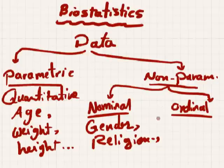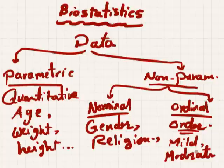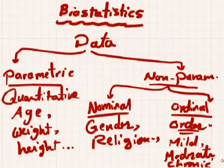Ordinal data is defined by order or ranking. For example, when I say this patient has mild asthma, moderate asthma, or chronic asthma — or when I say this is acute or chronic, this is severe — you are ordering them. This is the most important concept to understand well, because all the problems depend on your understanding of what type of data it is: nominal, ordinal, or parametric.